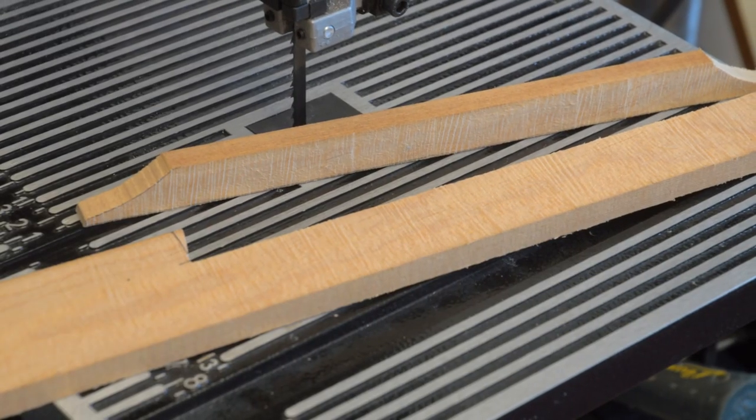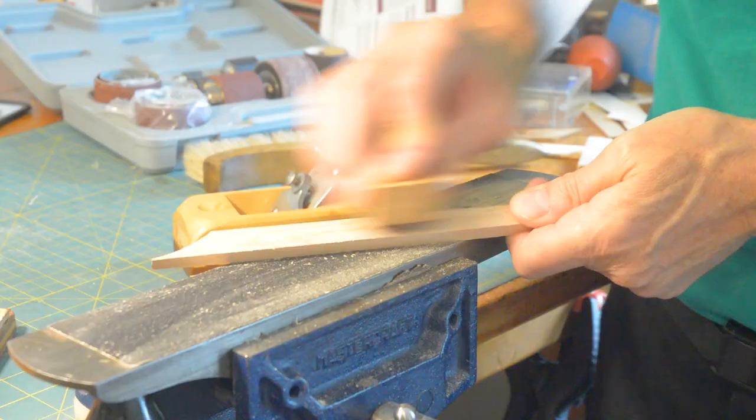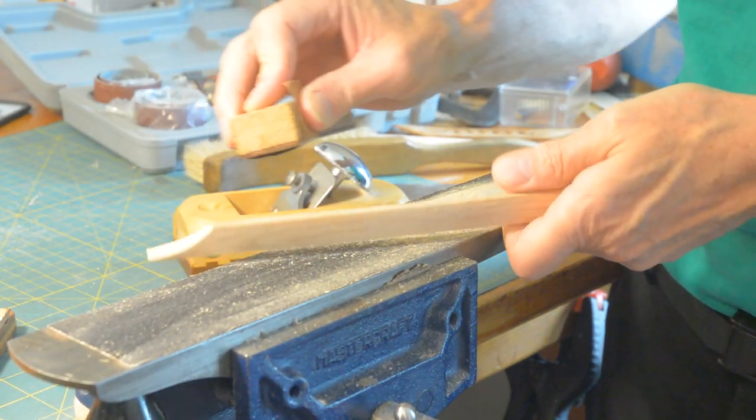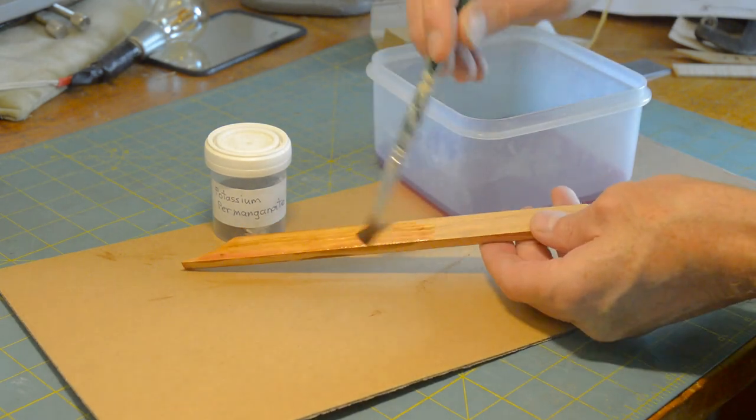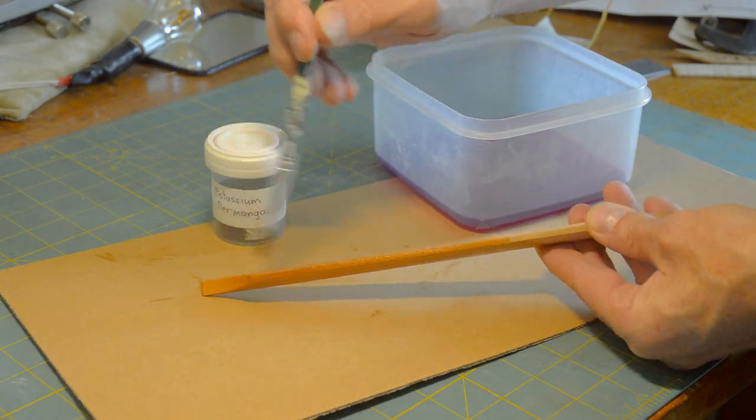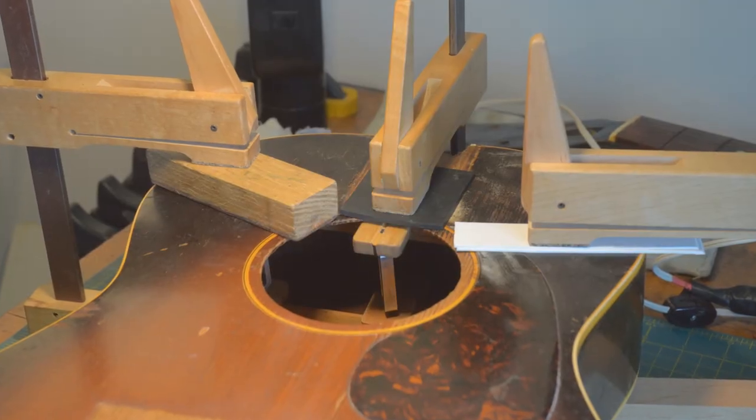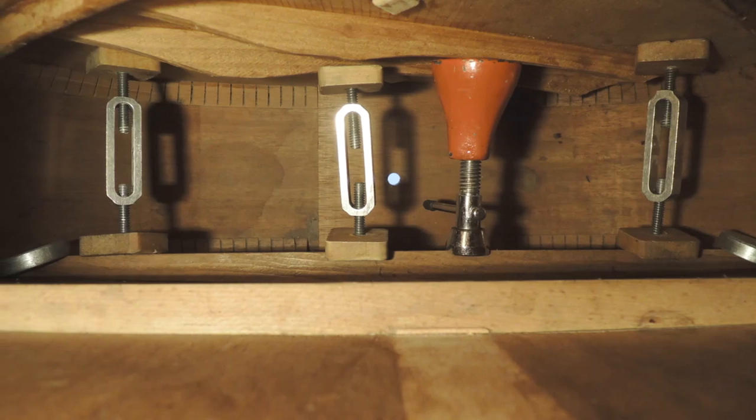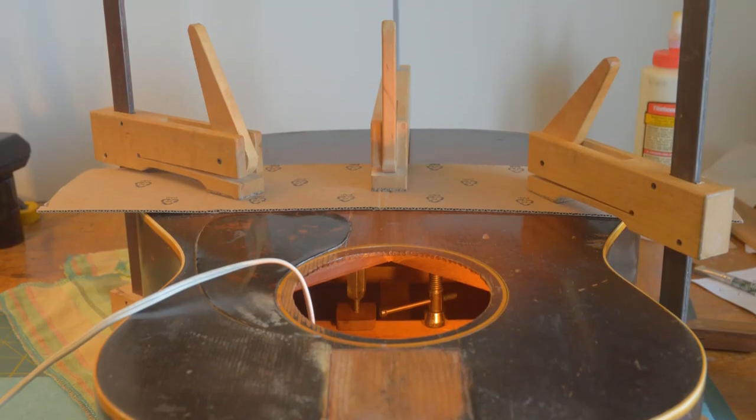Now I'm making a new back brace. And sanding it, getting it ready. This is potassium permanganate. And it ages the wood, makes it look like it's old. Then I clamp it in position. Here's a shot up the inside. Another one.